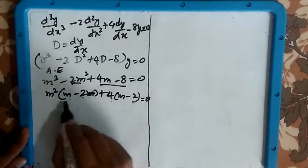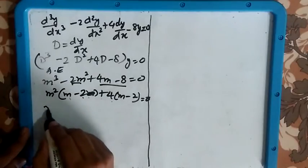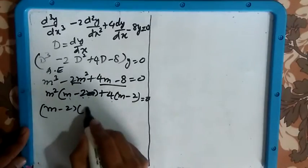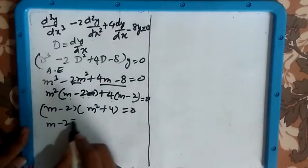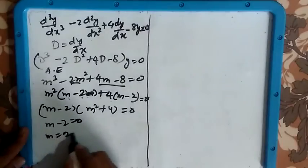You can see m - 2 is common in both. So you can write (m - 2)(m² + 4) = 0. So m - 2 = 0. One value will be m = 2 which is real.